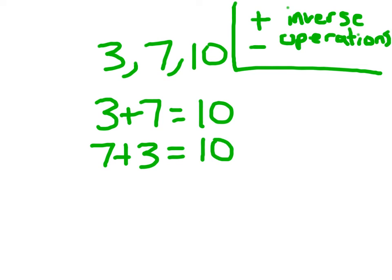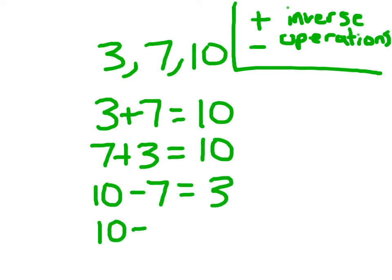We have related subtraction facts for this fact family. 10 minus 7 does equal 3, just as 10 minus 3 equals 7. You'll notice in each of these equations, we used each of these numbers — 3, 7, and 10 — once. This is the addition and subtraction fact family for those numbers, showing how addition and subtraction are related.